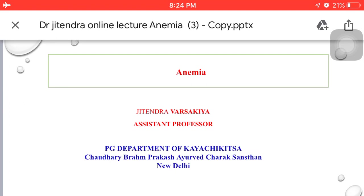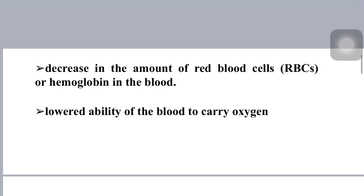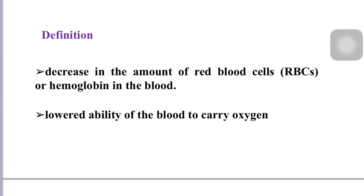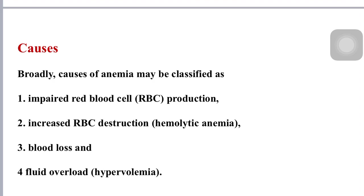Hello, welcome all of you in online classes. In the last lecture we talked about the disease Pandu and Kamla according to Ayurveda. Now coming to Anemia — its modern review of Pandu disease. Anemia refers to the state in which the level of hemoglobin in the blood is below normal range, usually defined as a decrease in the amount of red blood cells or hemoglobin in the blood. It can also be defined as a lower ability of the blood to carry oxygen.